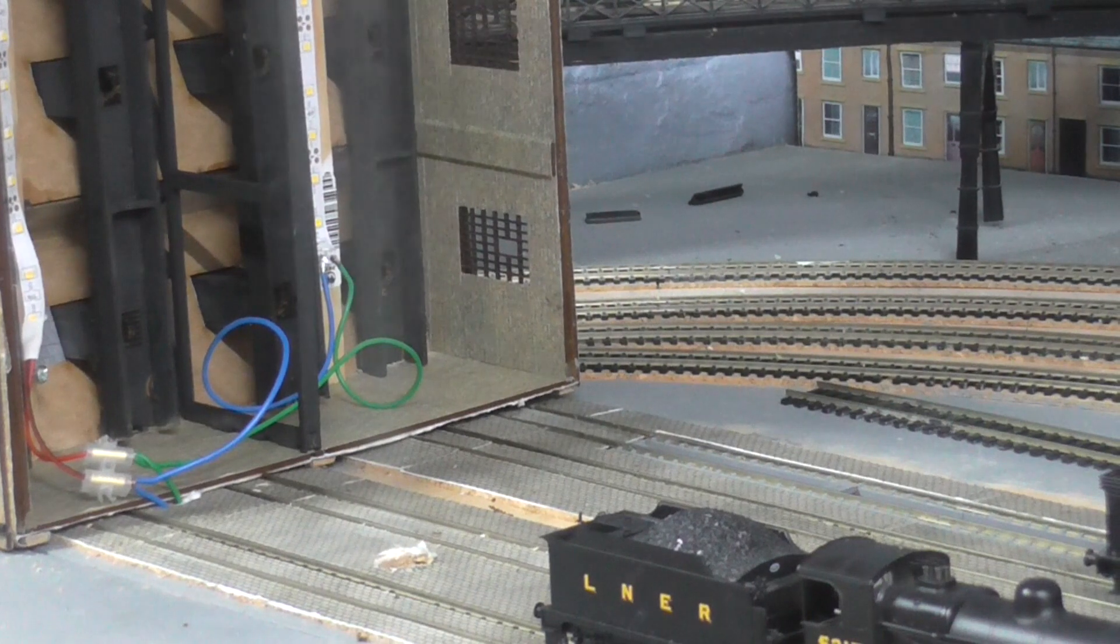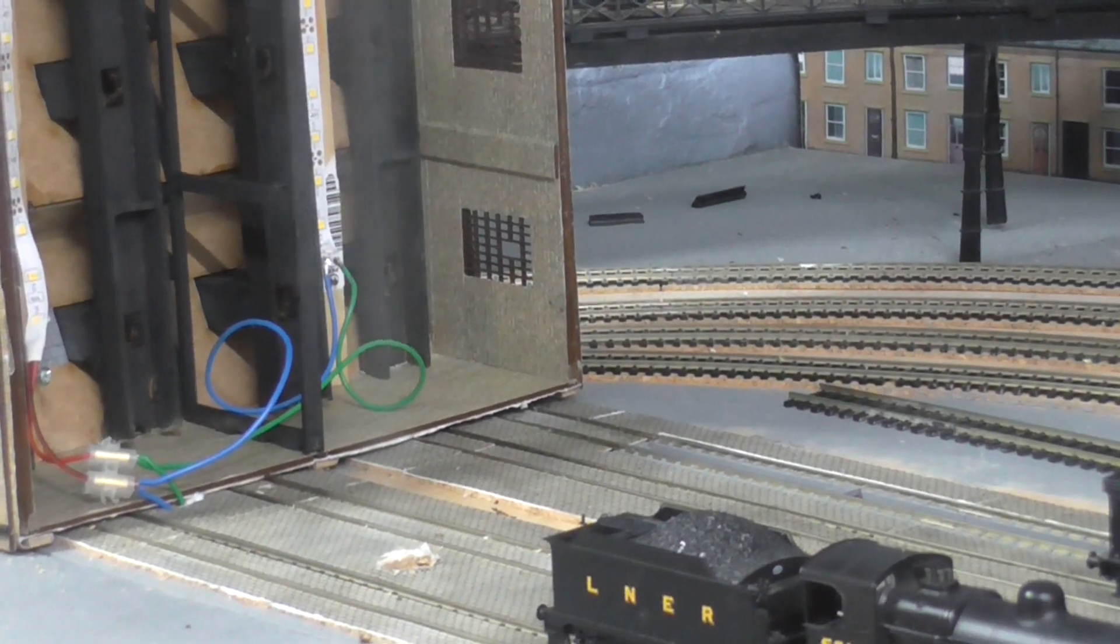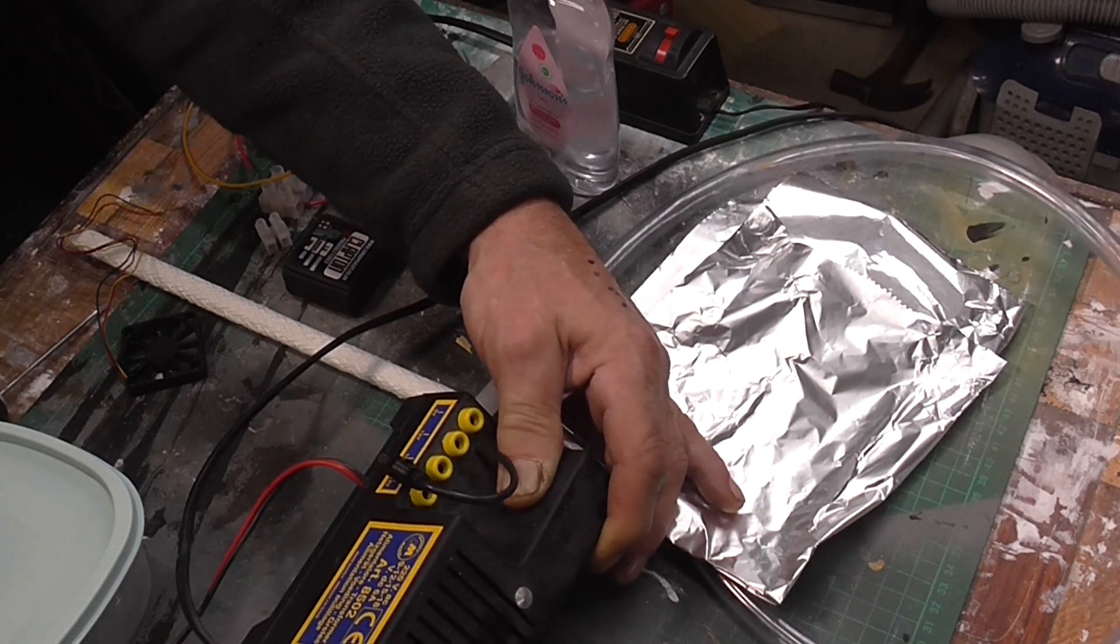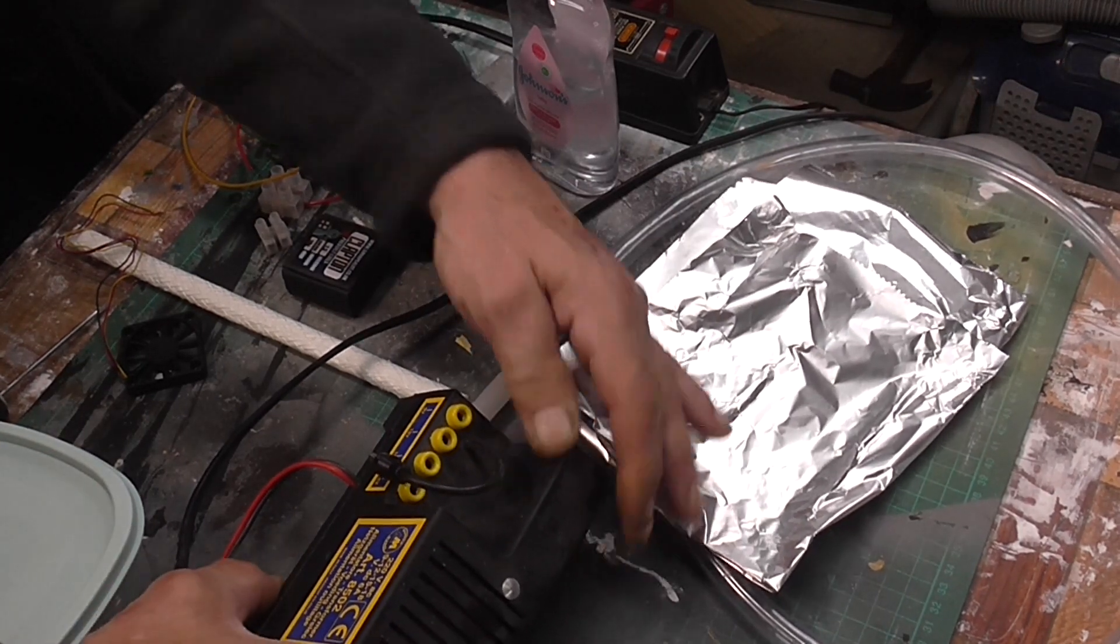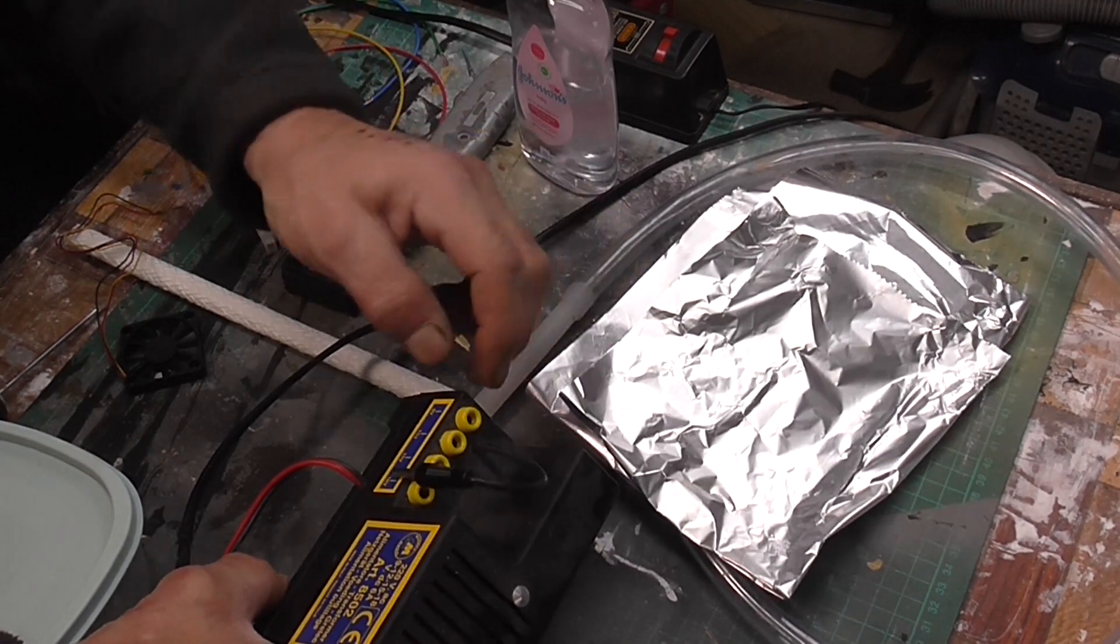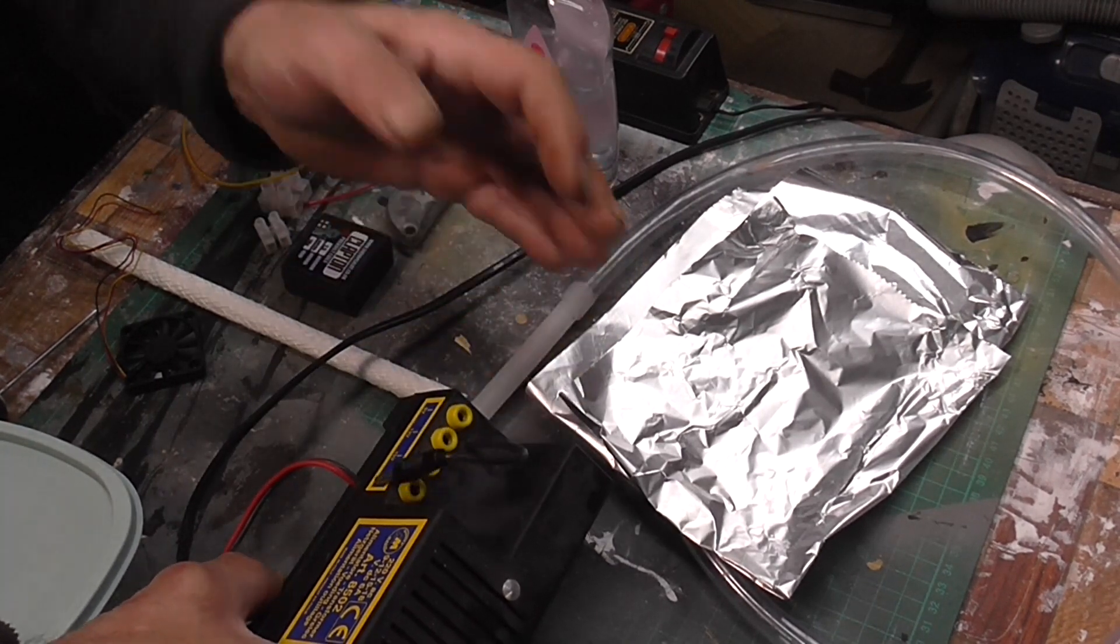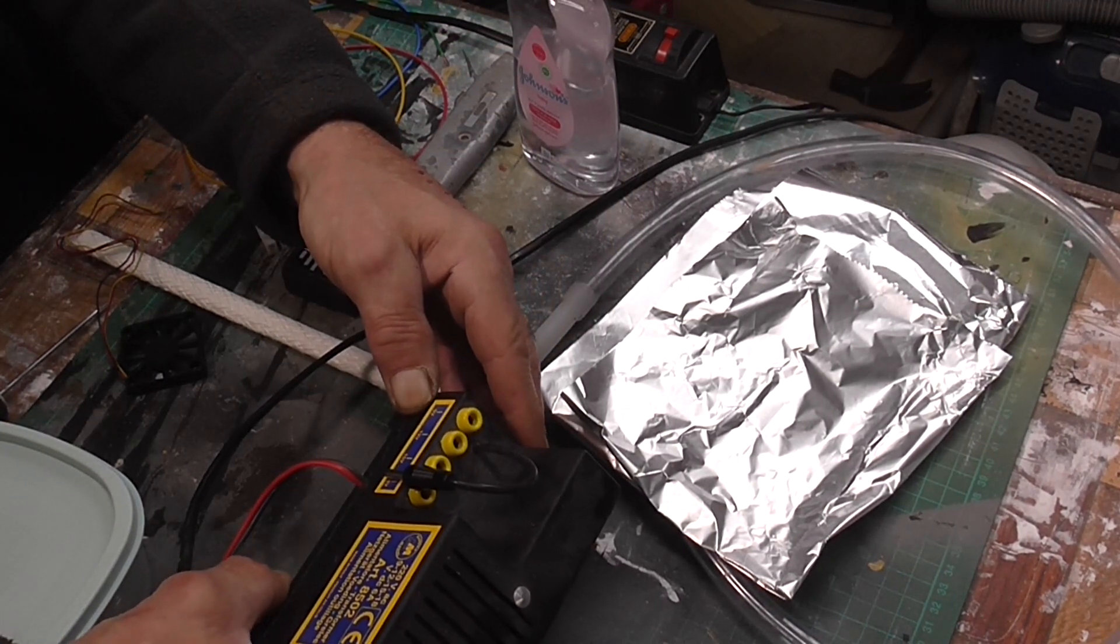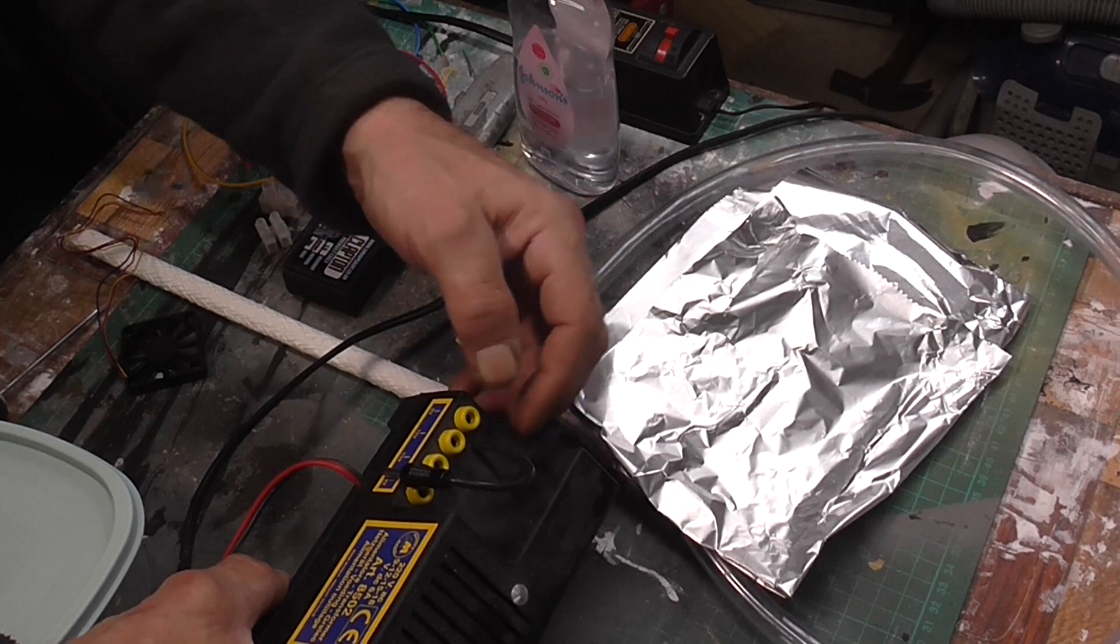So what do you need to build one of these? The first thing you need is a power source. I've got a transformer here which goes from 9 to 18 volts. I found that if it went too high it set fire to the wick instead of just burning the smoke. So I've been running this one on 9 volts.